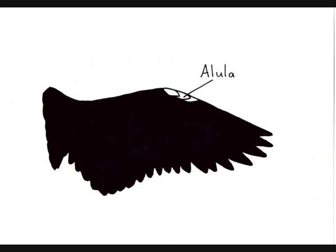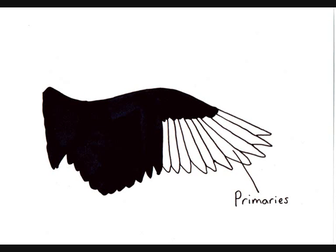The alula is not considered a flight feather, as they lack the length and stiffness of true flight feathers. The primaries are the longest and narrowest of the flight feathers. They can be individually rotated, which is important for flapping flight, as they are the principal source of thrust. Most thrust is generated on the downstroke of flapping flight.